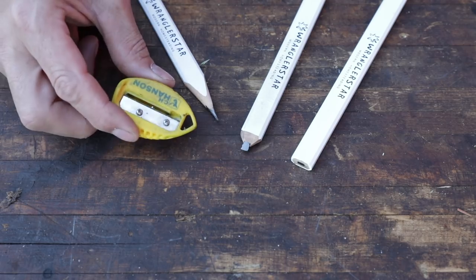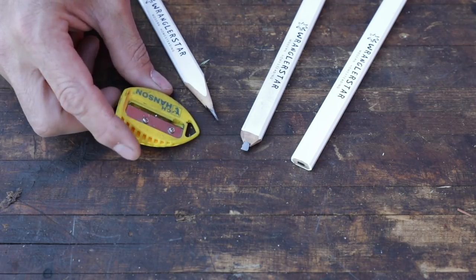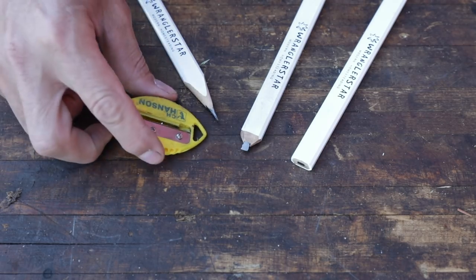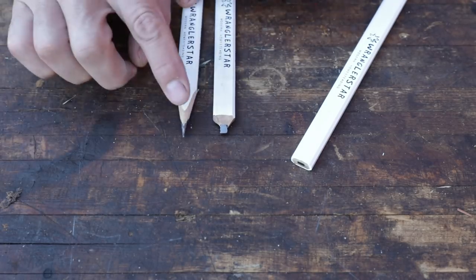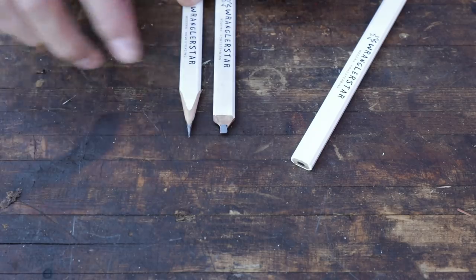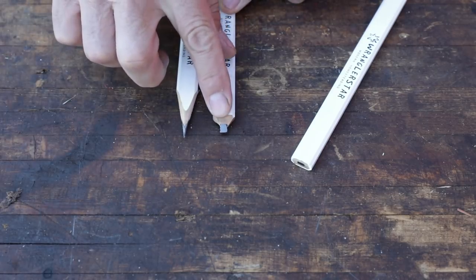But what I have found, traditionally this is all wrong. So you see these two tips here. This is sharpened with the Hanson sharpener. This is sharpened the way it's supposed to be.